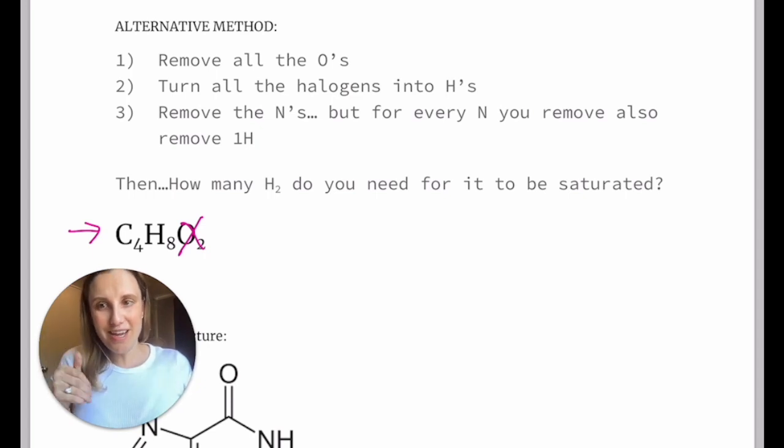Essentially a halogen behaves in the same way as a hydrogen, like it only forms one covalent bond. And then the weird part is that if you have nitrogens, we're going to remove them. But for every nitrogen, you also remove one hydrogen. So if you're looking at the formula, you can see how this kind of works the same way, but it's just a different way of thinking about it.